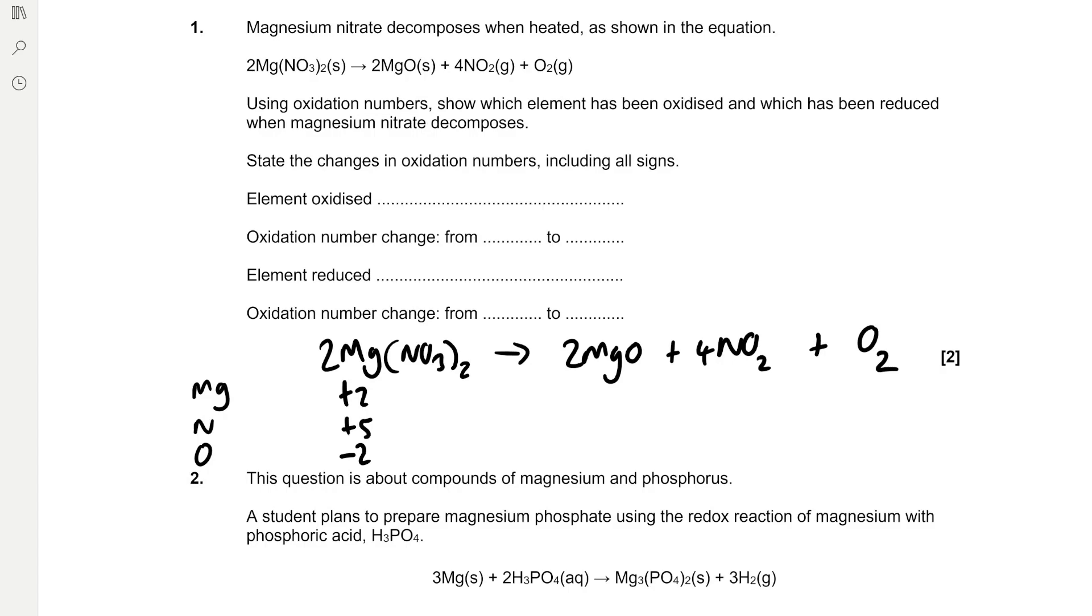Then in magnesium oxide, magnesium is going to be +2 and oxygen is going to be -2, and that adds up to 0. And then in NO2, we can find nitrogen because oxygen is going to be -2 times 2, which is -4. And then that means the nitrogen must be +4 because there's only one nitrogen atom, so that adds up to 0. And then oxygen on its own is simply going to be 0 because an element on its own is just 0.